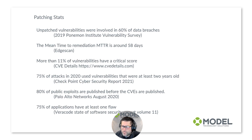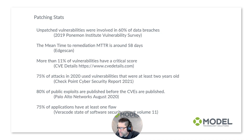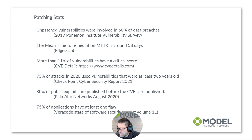Some statistics to drive this home: according to the Ponemon Institute, 60% of breach victims said they were breached due to an unpatched known vulnerability where the patch was not applied. However, 62% claimed they weren't even aware that their organization's vulnerabilities were there before the breach. According to EdgeScan, the average time to remediate internet-facing vulnerabilities was 57.5 days, a slight improvement over the prior year's 60.3 days.